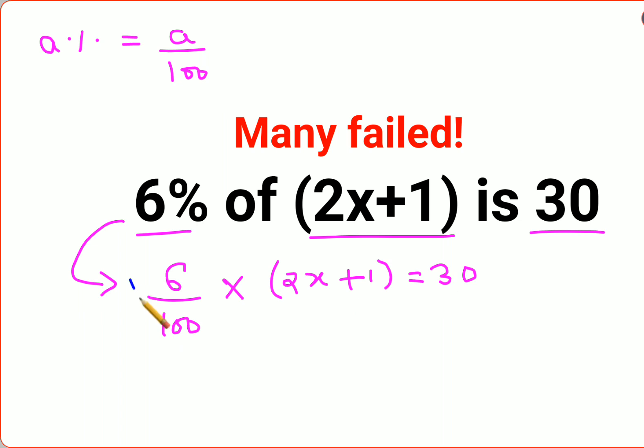Now in order to find the value of x, we'll shift all the numbers on one side of the equal sign. So we'll multiply both sides by 100 and divide both sides by 6. This gets cancelled, this gets cancelled.